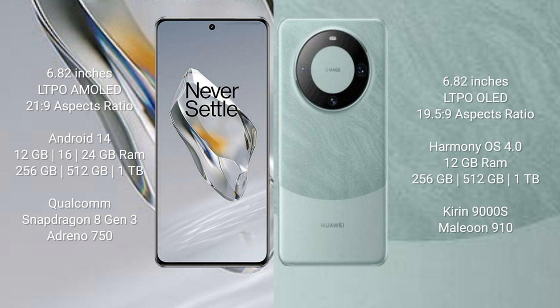OnePlus 12 comes with 12GB, 16GB, or 24GB RAM and 256GB, 512GB, or 1TB internal storage. It features the Snapdragon 8 Gen 3 processor and Adreno 750 GPU.